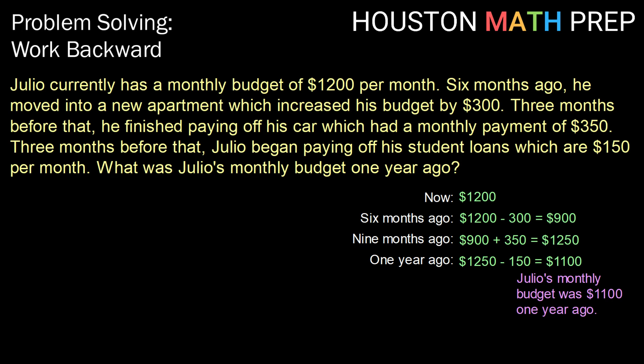So we have our answer — Julio's monthly budget was $1,100 one year ago. Looking back, we need to think about: did we answer the question? Absolutely, we found that monthly budget. Was the strategy of working backwards appropriate? Definitely. That does it for this video on problem solving working backwards. To see more examples, we'll catch you in the next video.